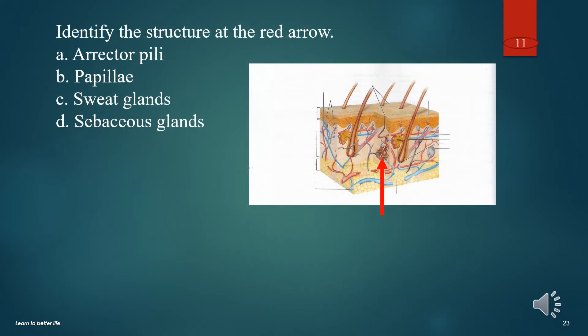Identify the structure at the red arrow. A. Eccrine. B. Papillae. C. Sweat glands. D. Sebaceous glands. The answer is C. Sweat glands.